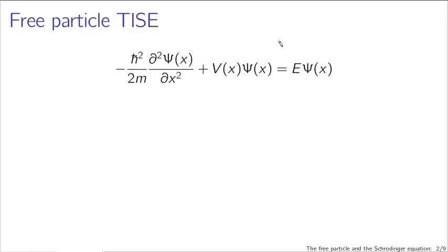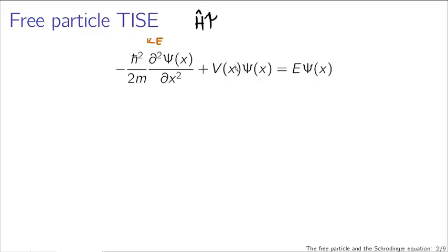The time-independent Schrödinger equation — and we're back to one dimension now, so think of a particle floating in the vacuum of one-dimensional space. The left-hand side is the Hamiltonian operator applied to the wave function, representing total energy, which breaks down into a kinetic energy component with momentum squared divided by twice the mass, and a potential energy part v of x.